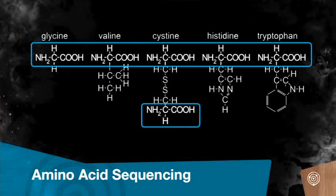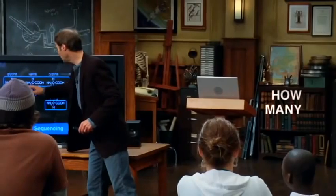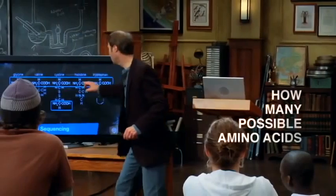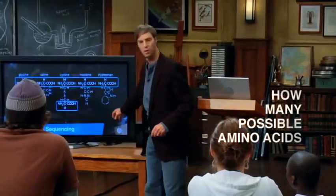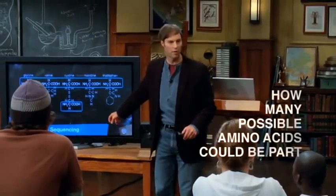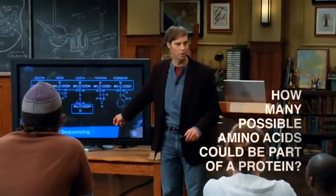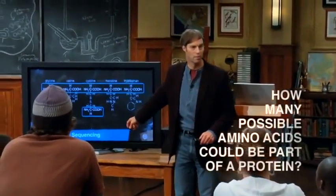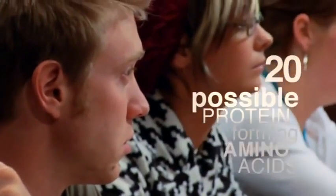How the amino acids are the building blocks of the proteins. At each one of these sites, how many possible amino acids could be part of a growing protein? Do you know this from biology? There are 20 possible protein-forming amino acids.